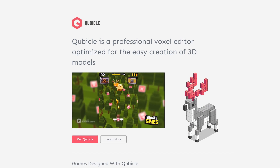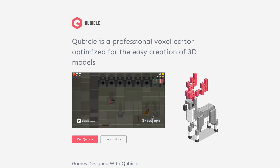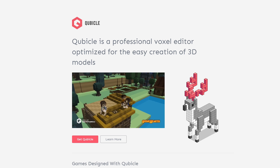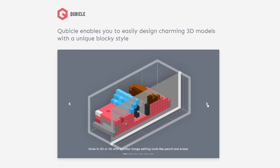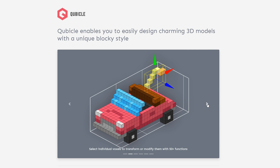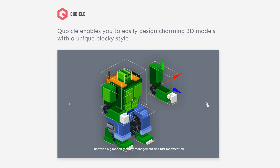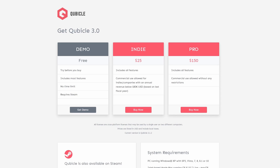Next is Qubicle, which was actually used in the creation of games like Crossy Road and Shooty Skies. Qubicle is a top choice for many game developers because it features a lot of export options, which makes it easier to import your models into the game engine of your choice. Qubicle does have a free trial option, but the indie license is available for just $25.